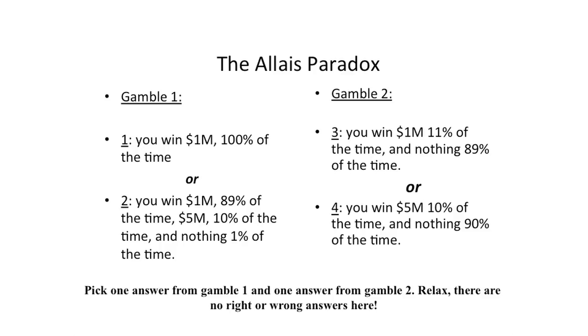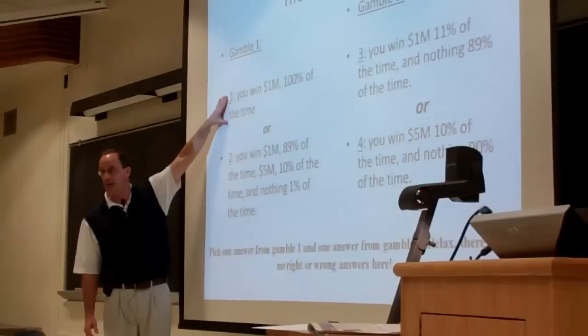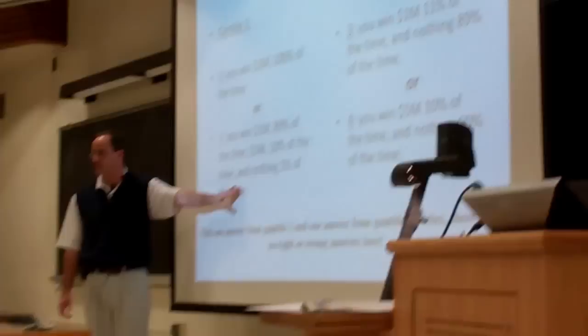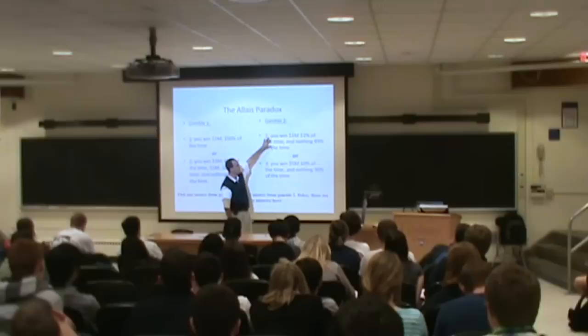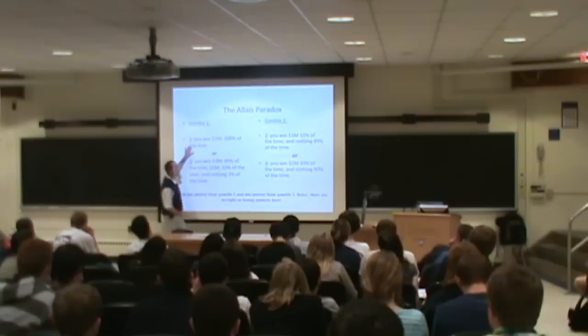I'm going to start with one and three. It turns out that an economist would say one and three makes perfect sense. If your goal is to make sure you win something, then option one gives you the best chance of winning because there's a one-in-a-hundred chance you might get nothing with option two. And if you're looking at the best chance of winning something, you'd choose three as well — there's an 11% chance of winning versus only 10%. So anybody who chose one and three — the economist sees that as internally consistent.